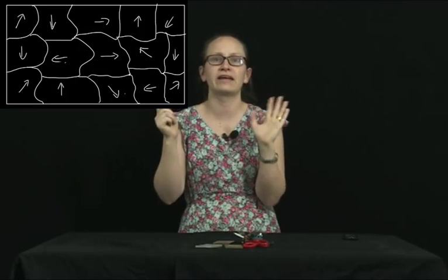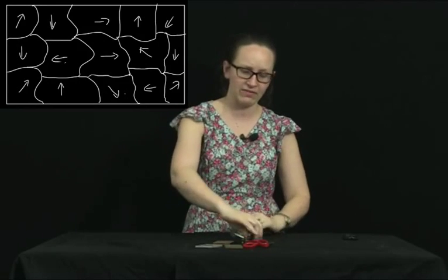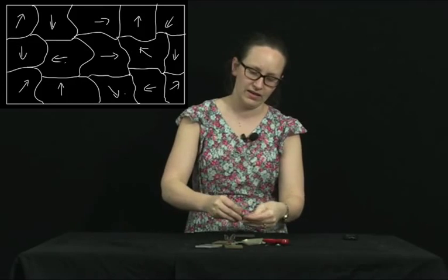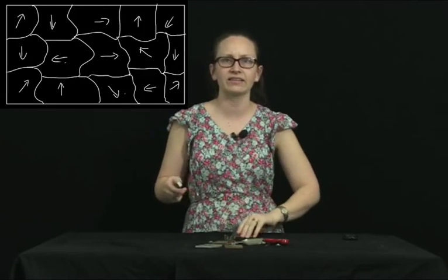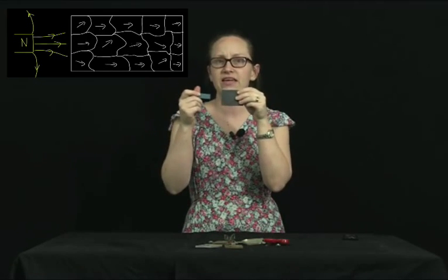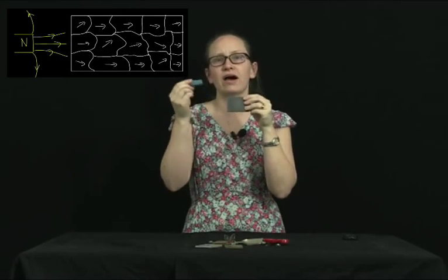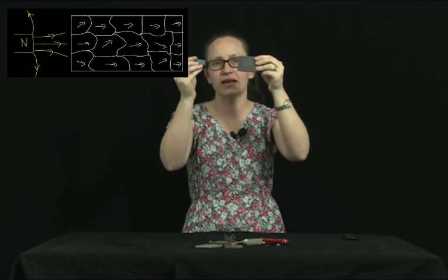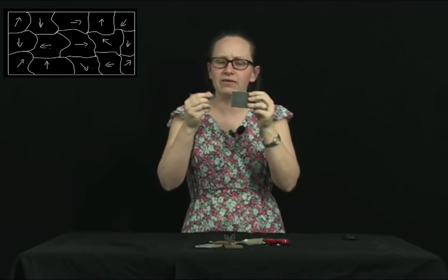However, if we bring a magnet such as this one near the iron, then the domains inside that iron try to align up to this magnetic field. Now if I remove the magnet from the lump of iron, it tends to go back to normal. The domains go back to being randomly aligned.